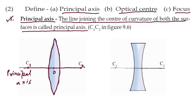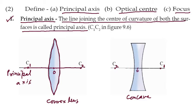This lens is your convex lens, so you have to write here 'convex lens.' And now this is your concave lens. C2 is on one side, C1 is on the other side. The line joining C2 and C1 through the optical center — this line is the principal axis.